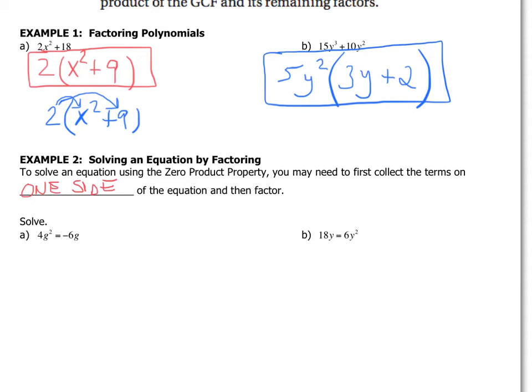So here's an example. 4g² equals negative 6g. Well we know that I can't just work across the equal sign. I would need to bring with my inverse operations the 6g's to the other side.